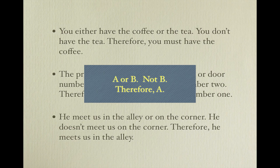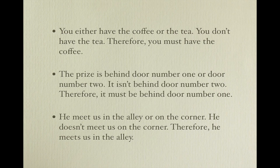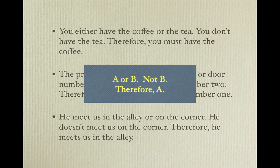Looking at the first example: you have either the coffee (A) or the tea (B). You don't have the tea — not B — therefore you must have the coffee (A). The prize is behind door number one (A) or door number two (B). It isn't behind door number two — not B — therefore it must be behind door number one (A). He meets us in the alley (A) or on the corner (B). He doesn't meet us on the corner — not B — therefore he meets us in the alley (A).